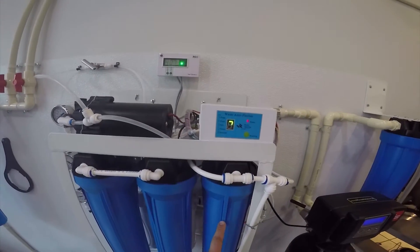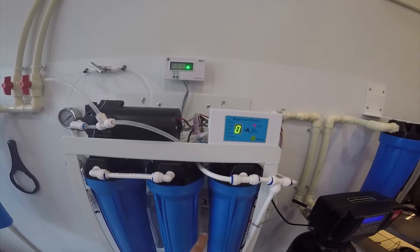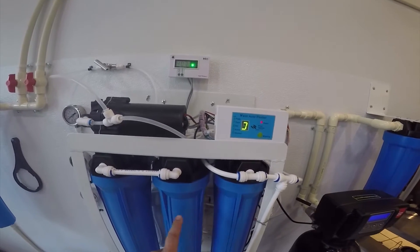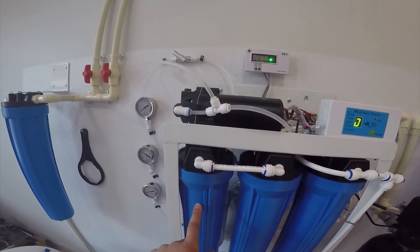The water comes into three separate filters. This is like a 10 micron. These are carbon filters that take out the chlorine and fluorine.